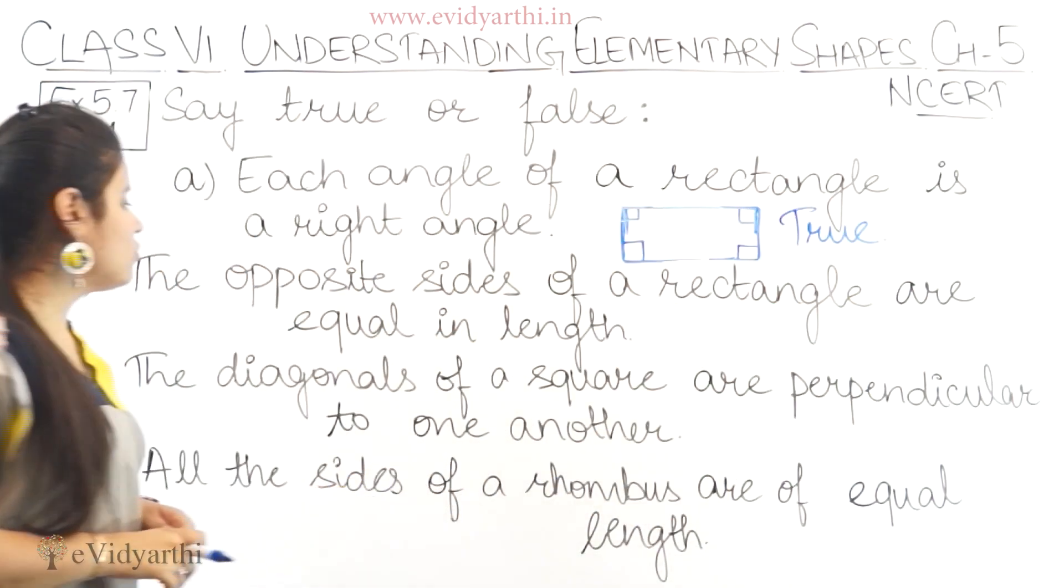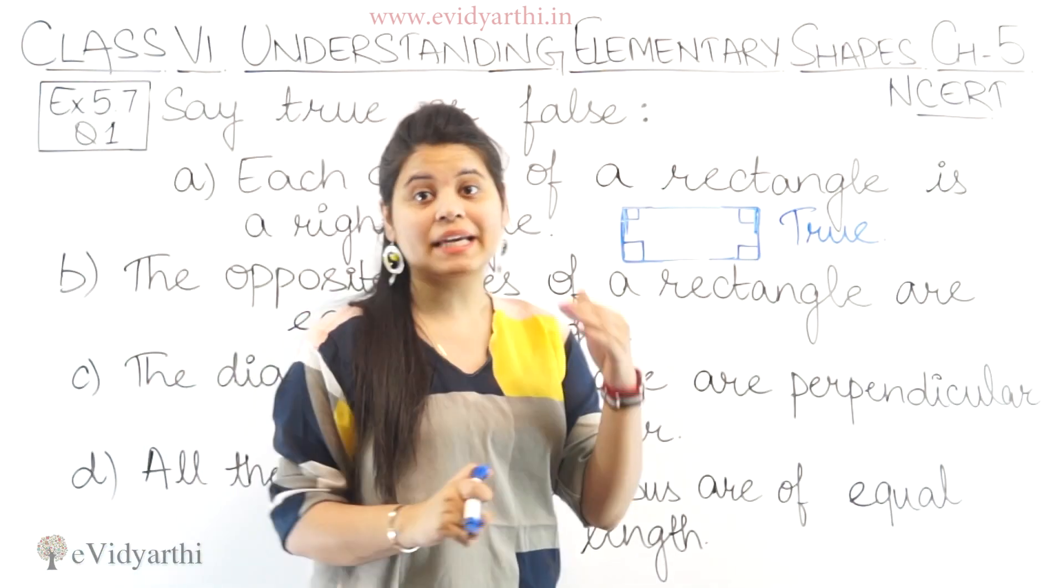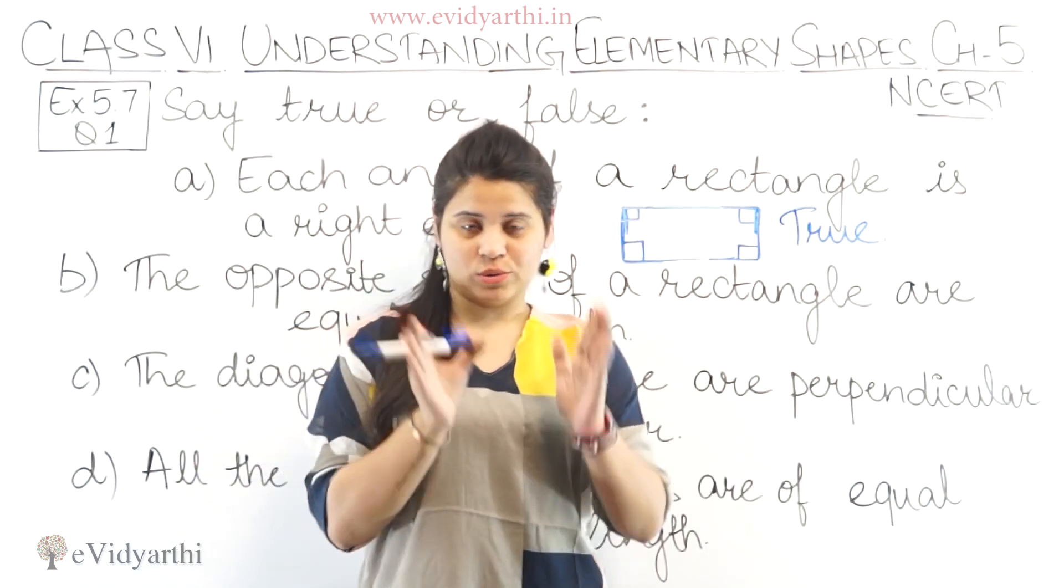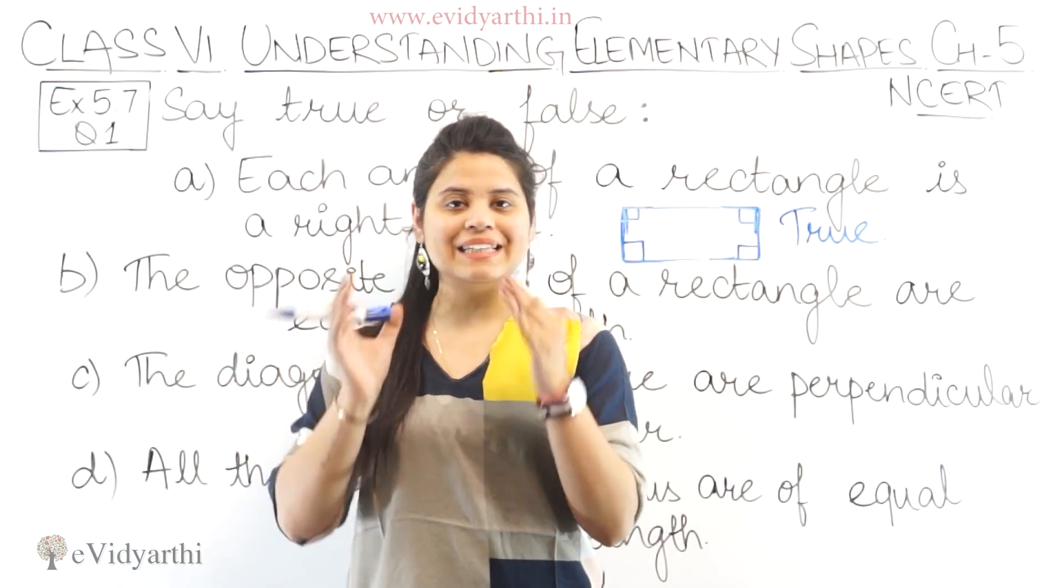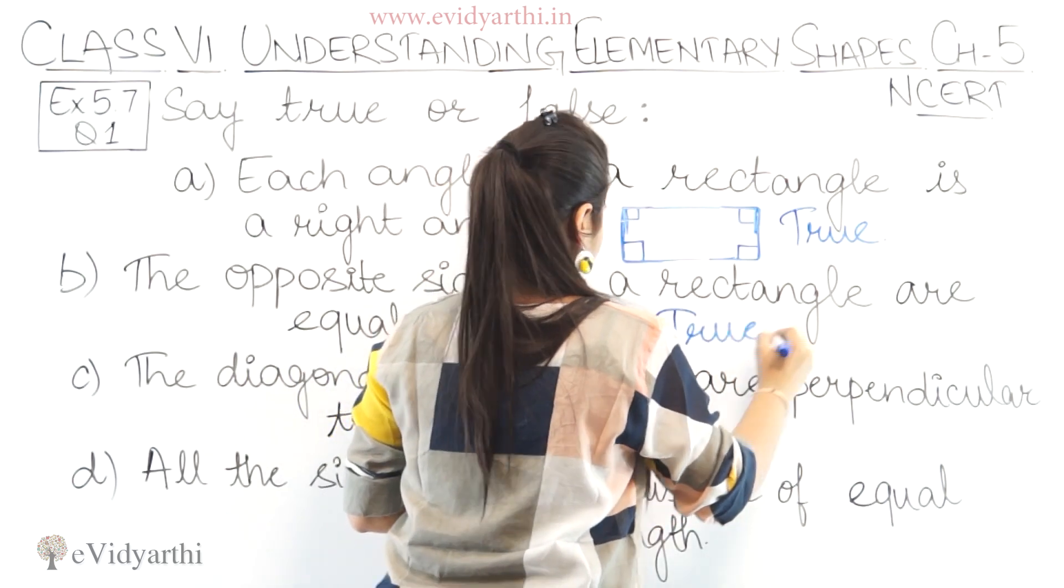Next we have the opposite sides of a rectangle are equal in length. Rectangle ki jo opposite sides hoti hai wo equal hoge. Jaise square me saari sides equal hoge hai, usi tarah rectangle ki opposite sides equal hoge hai. So this is also true.